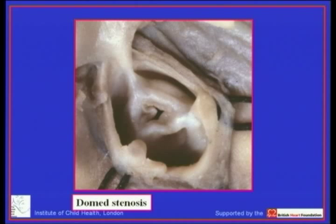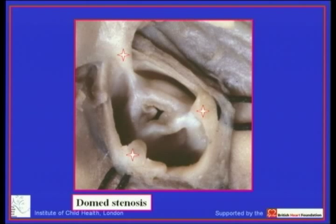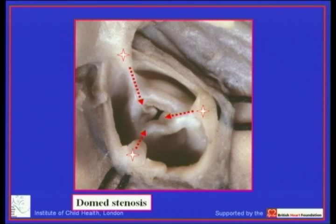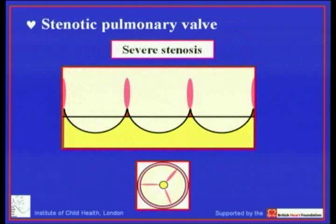That is exactly what you see in domed stenosis of the pulmonary valve. Here you are looking down on a critically stenosed pulmonary valve, and you can see the peripheral attachments at the sinutubular junction, how the leaflets are tethered at those attachments, and how commissural fusion — the fusion between leaflets along the zones of apposition — has progressed towards the centroid of the valvar orifice. The greater the degree of such fusion, the more severe will be the valvar stenosis.